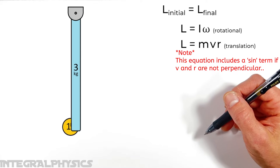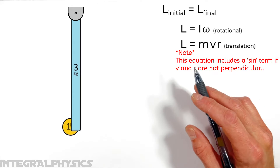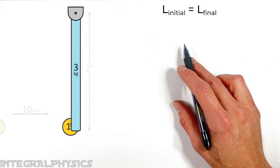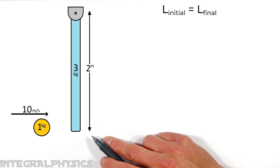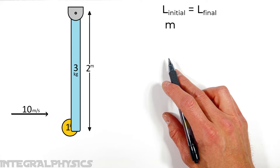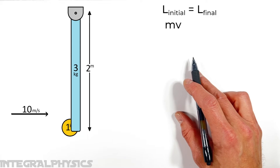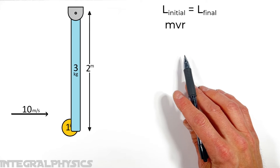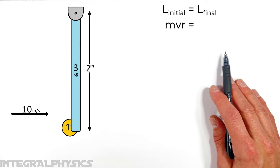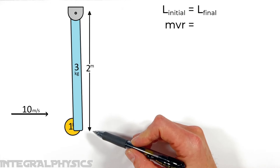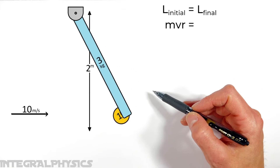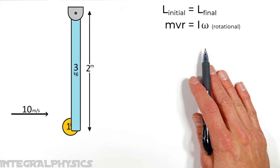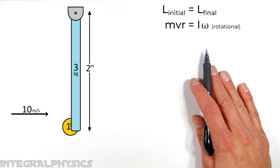Before the collision, we just have this ball moving in a straight line, so it has angular momentum M times V times R — where R is the distance from the pin to where it hits the tip of the rod, which is the length of the rod. We set that equal to the angular momentum after the collision. After the collision, both the ball and the rod are rotating, so we look at angular momentum as rotational motion: the total inertia after the collision times the angular velocity omega.